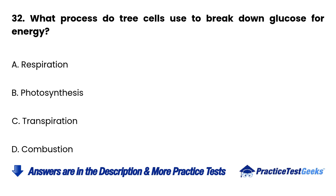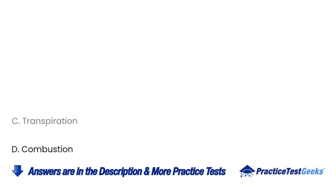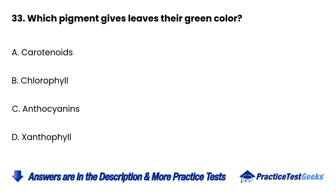Question 33: Which pigment gives leaves their green color? a. Carotenoids.